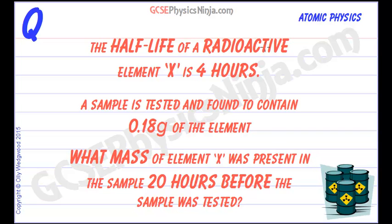The half-life of a radioactive element X is 4 hours. So that means that every 4 hours we will lose about half of the element X's nuclei as they decay radioactively by emitting alpha, beta or gamma radiation.